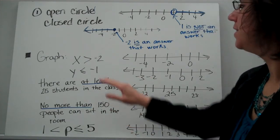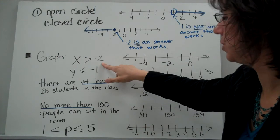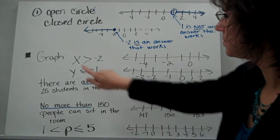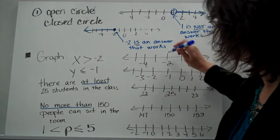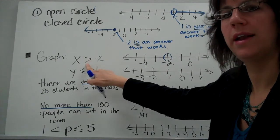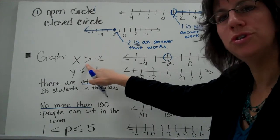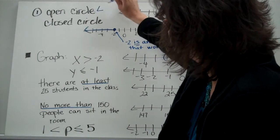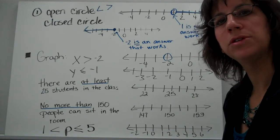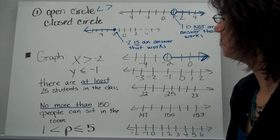Let's do some graphing together. Notice: x is greater than negative 2. I have my number line — I put negative 2 in the middle. Should I color it in, or keep it open? I look at the symbol: it's greater than, so negative 2 is not an option. It's an open circle. You use an open circle for less than or greater than symbols only. So I keep the open circle and shade all the numbers bigger than negative 2.